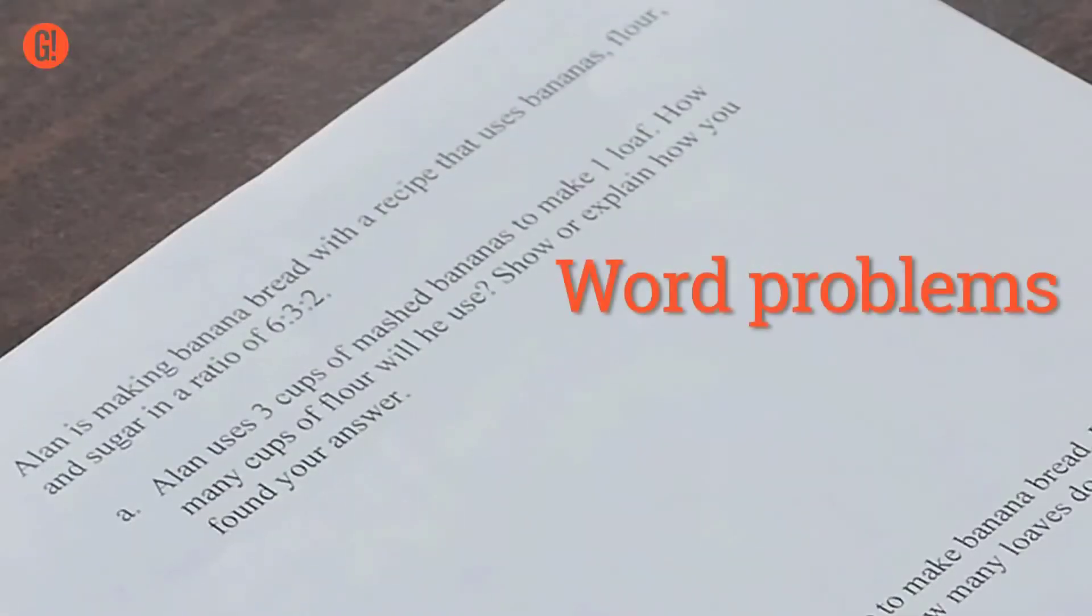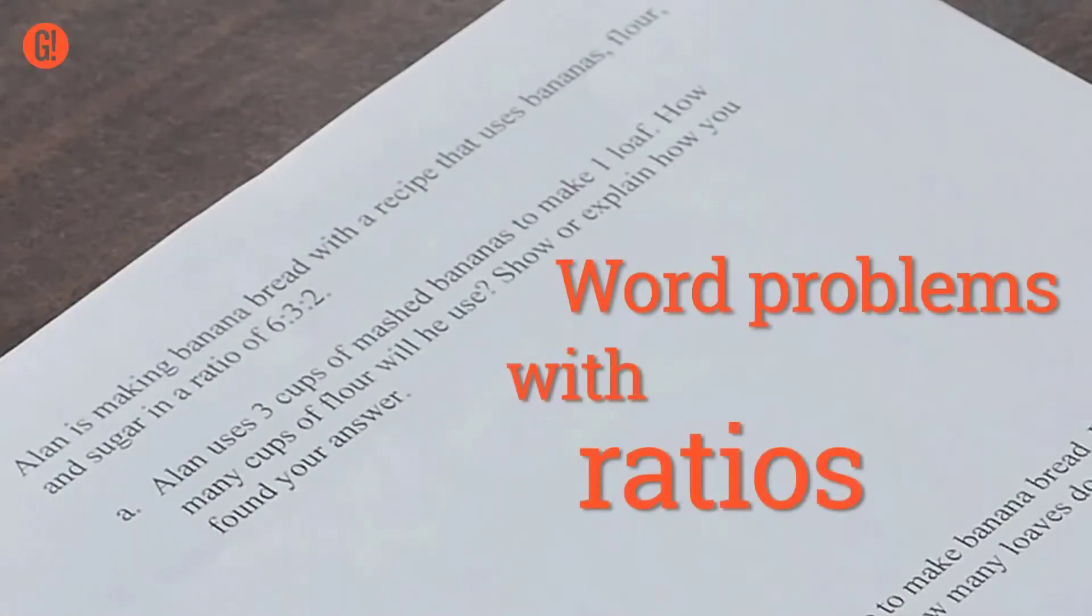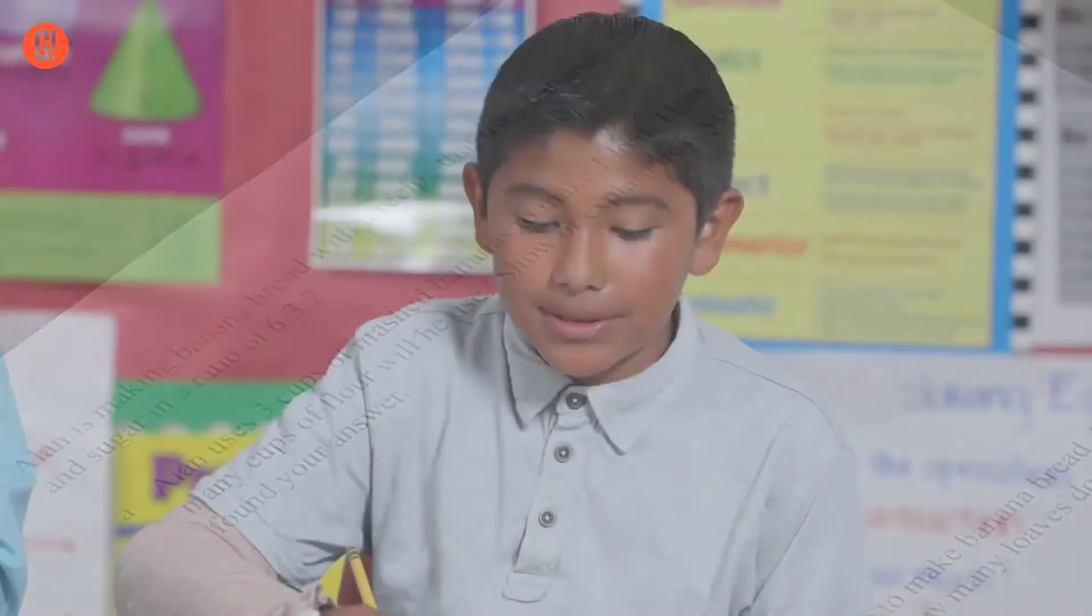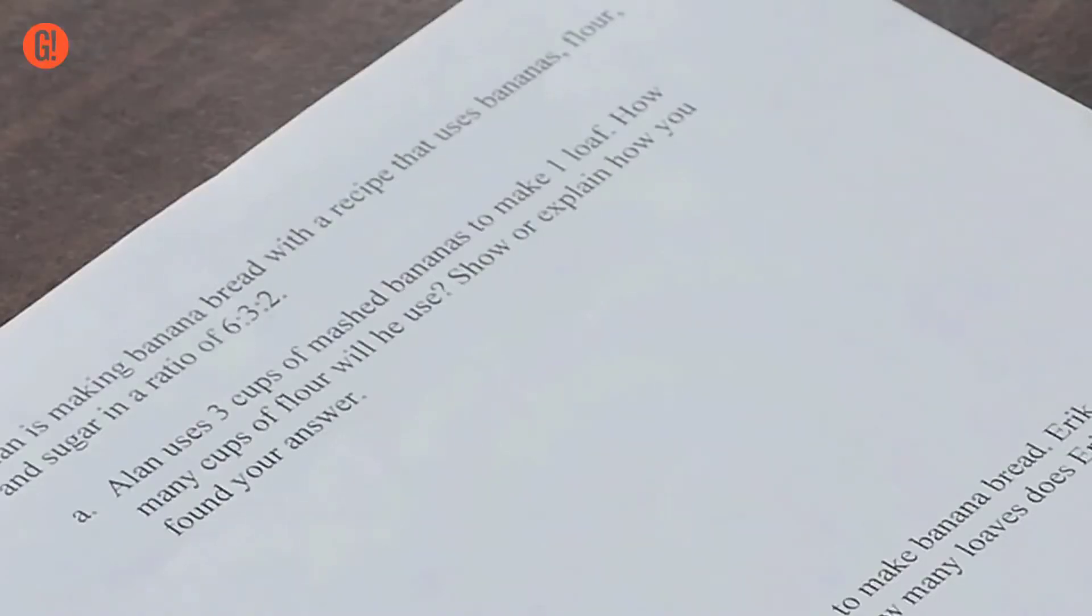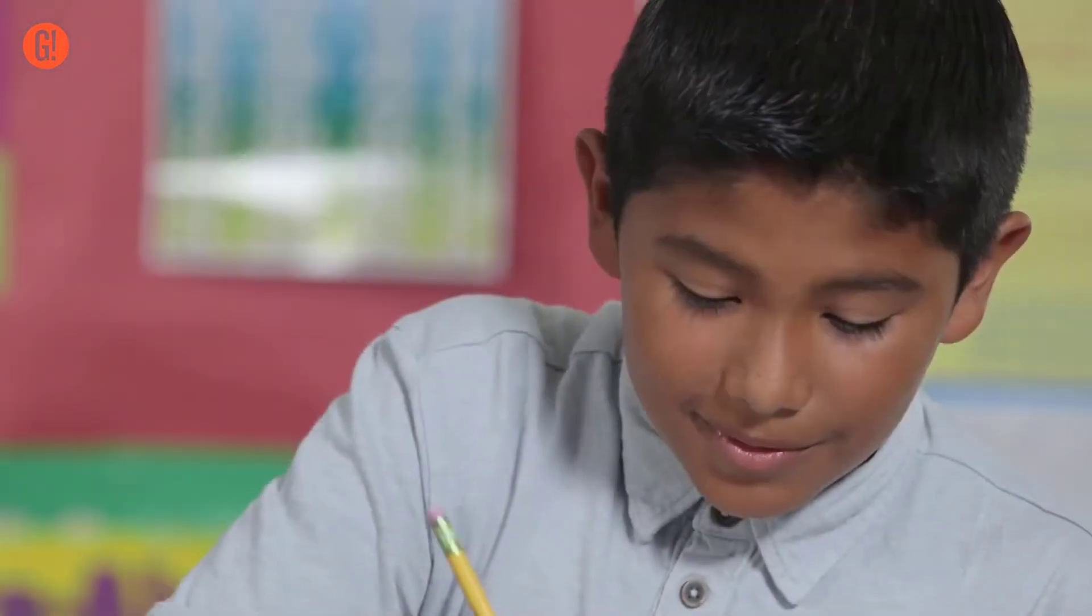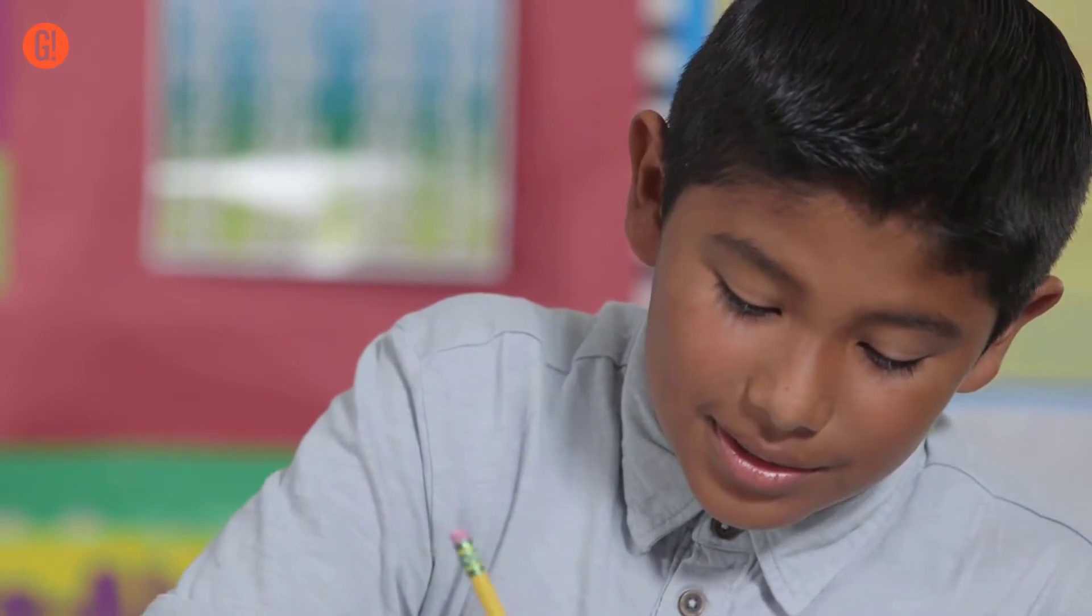With word problems, sixth graders show how they can apply their mastery of ratios to a real-life situation. Ellen uses three cups of mashed bananas to make one loaf. How many cups of flour will he use? First, kids should be able to use what they know about ratios to solve the problem.